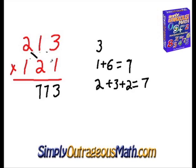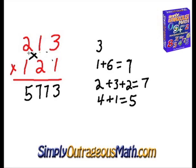Our next step is to multiply two times two, which is four. One times one is one. We add those together to get five. Then the last step is two times one, which is two. So our answer is 25,773.